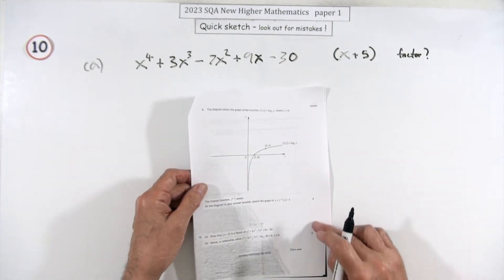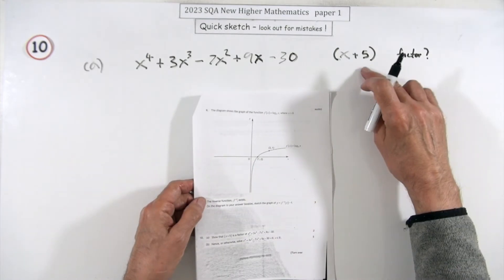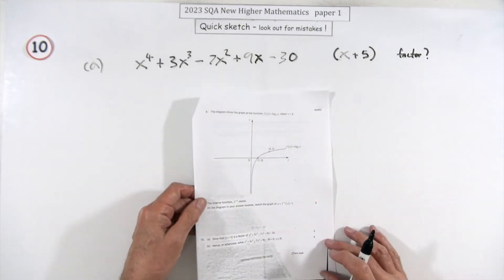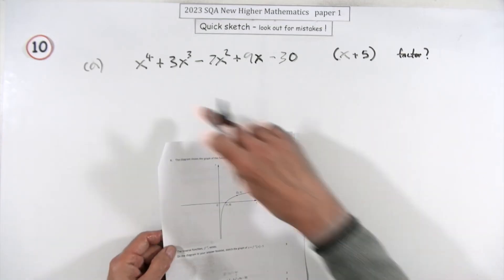Number 10 has seven marks for showing that x+5 is a factor of the polynomial. You get two marks for putting the synthetic division table down, and then five marks for carrying on to solve the equation equal to zero.